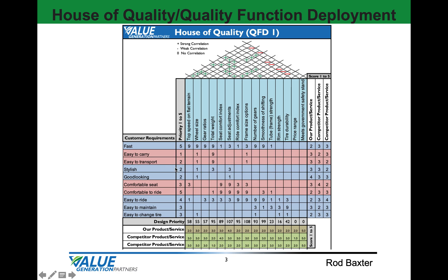We'll enter a correlation score for the design characteristics relative to the customer requirements — one being weak and nine being strong. We'll enter a paired correlation for each design characteristic, plus for a strong correlation and minus for a weak correlation. We'll also give design priority scores to our existing product and our competitor analysis against the design characteristics.